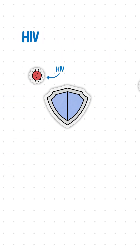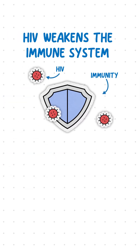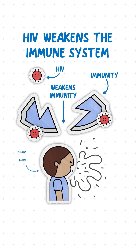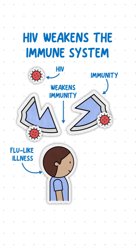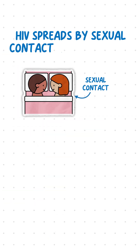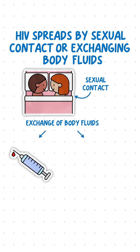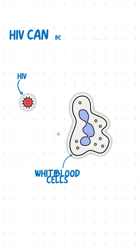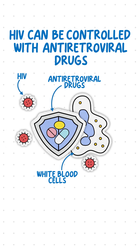Another viral disease is HIV, which weakens the immune system by attacking white blood cells, leading to initial flu-like symptoms. HIV spreads by sexual contact or exchanging body fluids, like sharing needles or breastfeeding. HIV can be controlled with antiretroviral drugs.